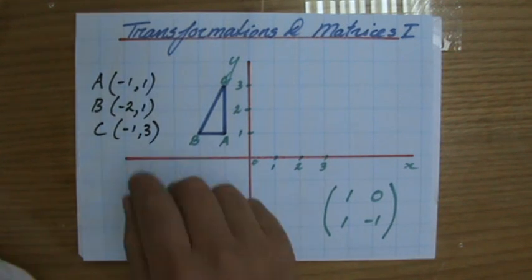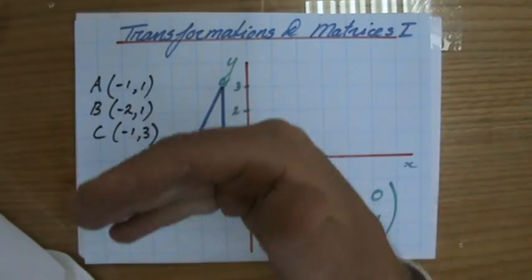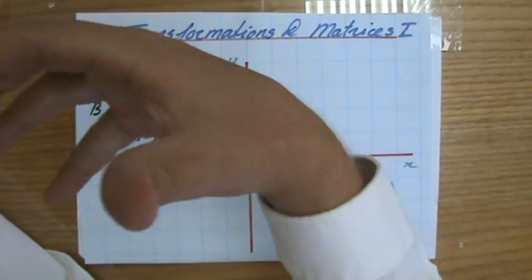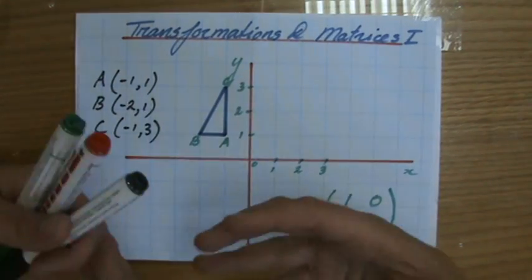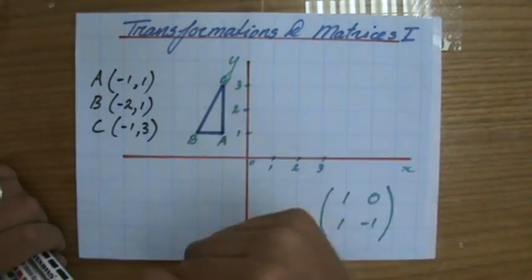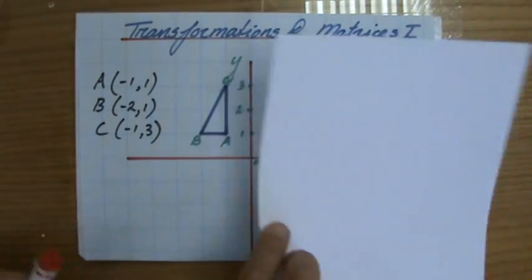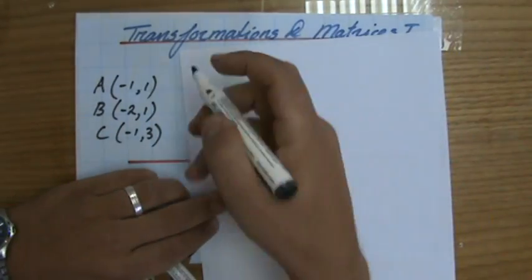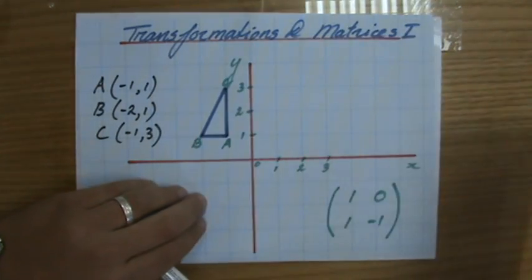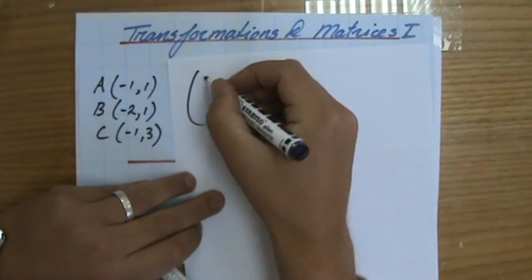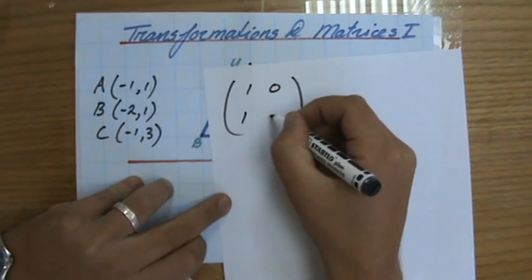Now I'm going to multiply each coordinate by this matrix. You need to be able to multiply matrices with each other. I'm going to multiply each coordinate by this matrix, and that will give me my new coordinate after the transformation. So I'm going to write down the matrix on a new piece of paper: the 2x2 matrix, 1, 0, 1 minus 1.